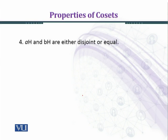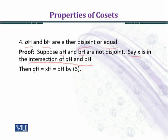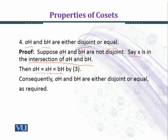Now we prove the next property: AH and BH are either disjoint or equal. Suppose AH and BH are not disjoint. Say X is in the intersection of AH and BH. Then AH equals XH, which equals BH, and consequently AH and BH are either disjoint or equal, as required.